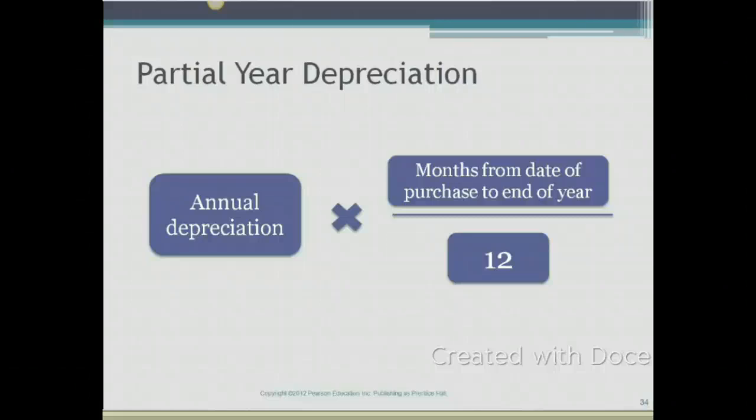All this time, we have been talking about companies that purchase their assets at the beginning of the year. If they purchase their assets at the beginning of the year, when you calculate your depreciation expense, you calculate the depreciation expense using straight line method, double declining balance or units of production, and you take the entire amount that you calculated as your depreciation expense in your first year.